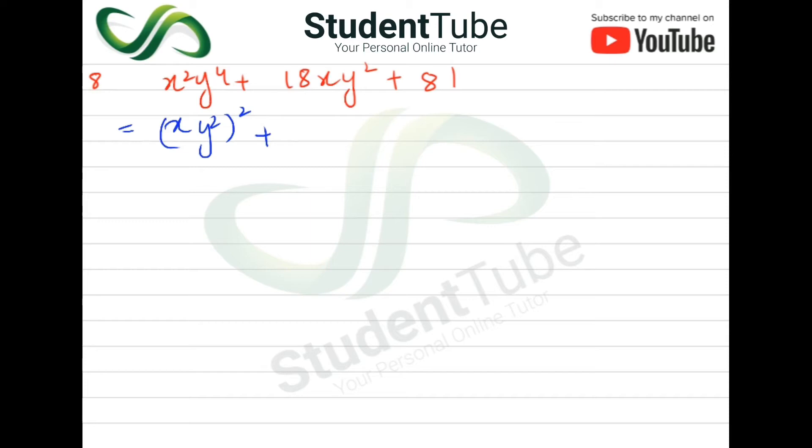So here is 18. If we open 18, then 2×9 = 18. So what do we do here? We write 2×9×xy² here and then 9 here. So if we solve this, then here 2×9 = 18 and xy² and then xy² is like this.